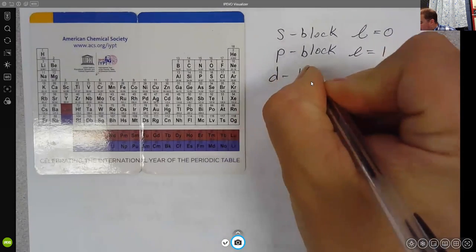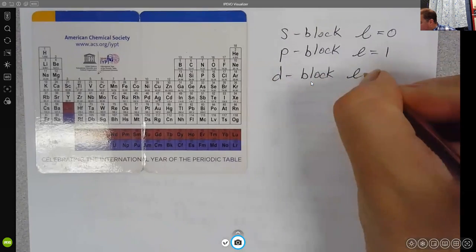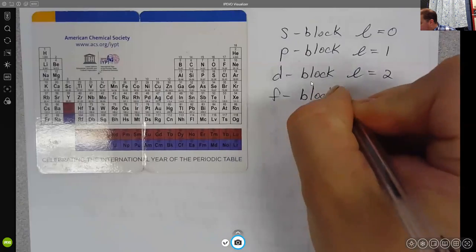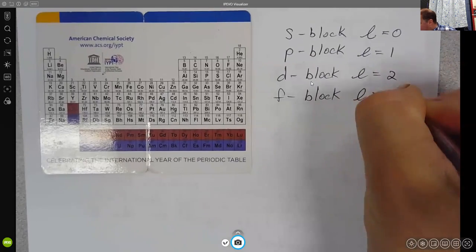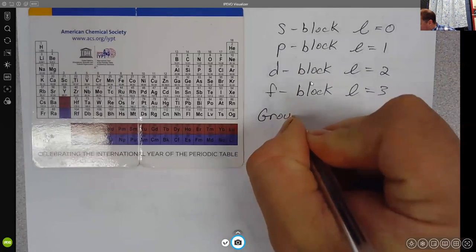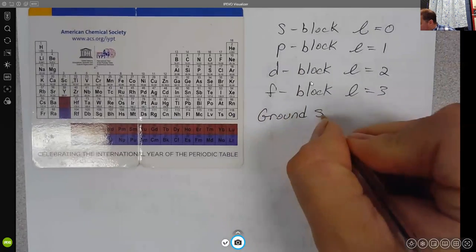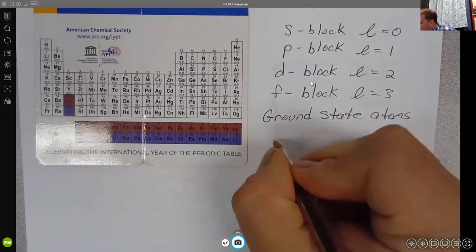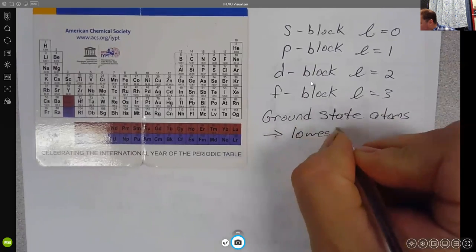We see the D block where the L would be 2, and we see the F block where the L would be 3. And this is as far as we go for ground state atoms, which is always going to be the lowest energy.